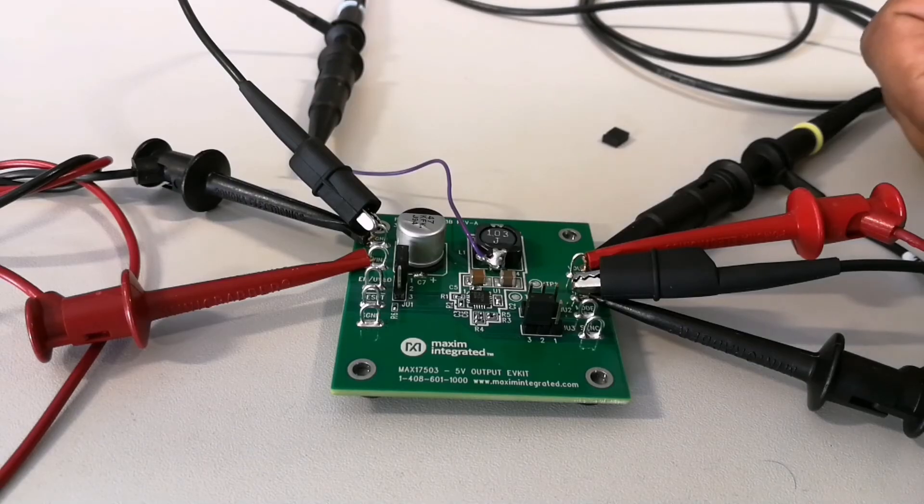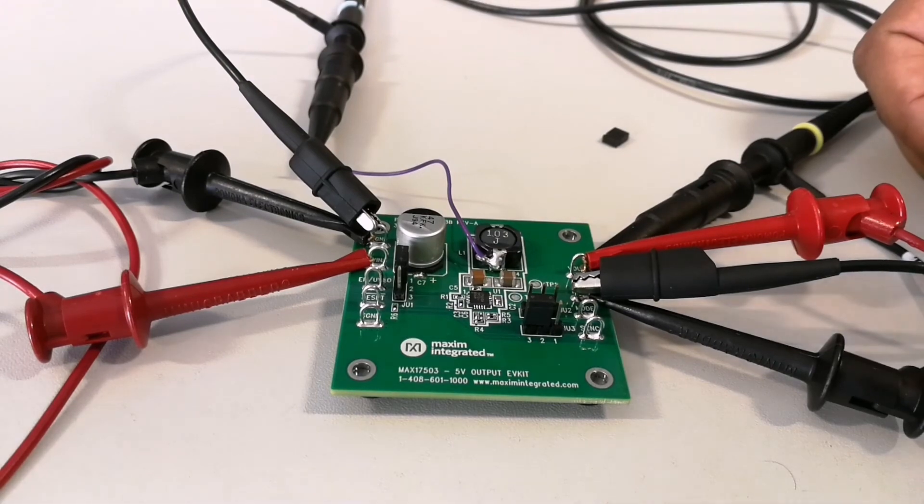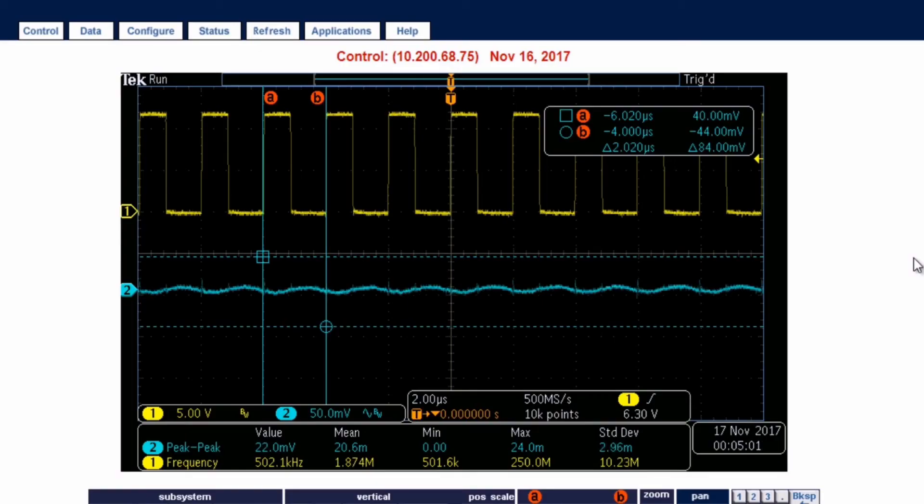Now the board is configured in PFM mode, and similarly, the board is running at 1 amp. I am reducing the load current from 1 amp down to no load to see where the PWM changes shape. Right now 0.9, and now you see around 200 milliamps we have PFM operation take place.